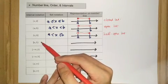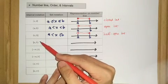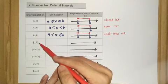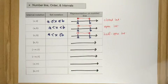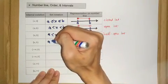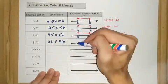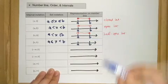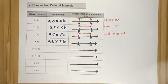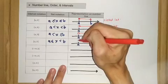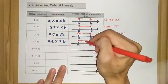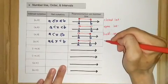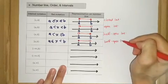The fourth type is again a half-open interval, but it differs from the third example. This interval starts with A and A is included, but B is not included. On the number line, we represent this with a dense dot at A and an empty dot at B. It takes all values from A up to B, but B is not included. This is also called the half-open interval.